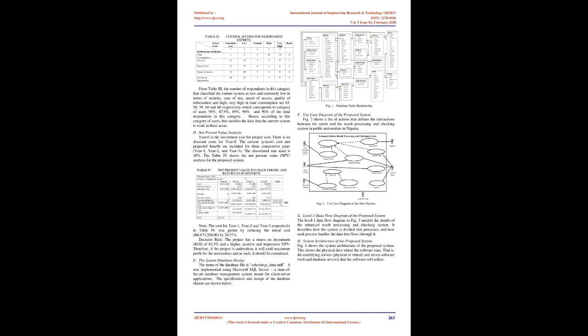Assessment/Measurement — Independent Experts (IEs): A total of 66 copies of questionnaire were collected from people identified in this role. Table III shows the control matrix for independent experts. The number of respondents who classified the current system as low/extremely low in security, ease of use, speed of access, quality of information, and high/very high in time consumption are 63, 58, 59, 60 and 60 respectively, corresponding to 95%, 87.9%, 89%, 90%, and 90% of the total respondents. Hence, this category of users also confirms that the current system is weak in these areas.